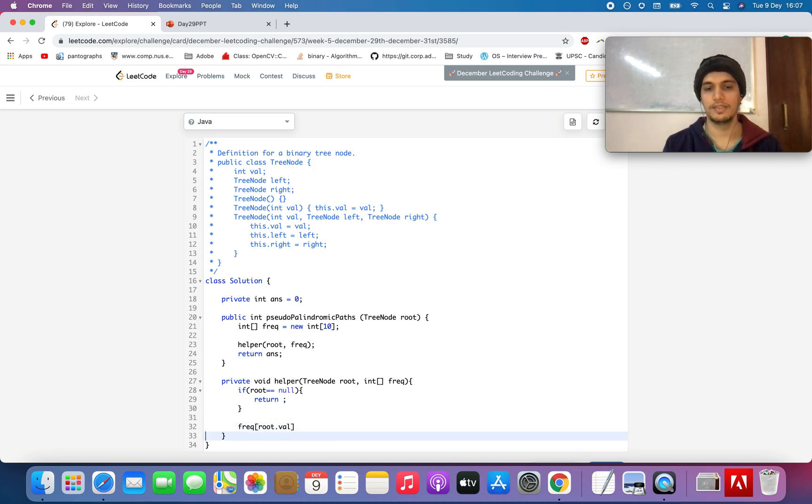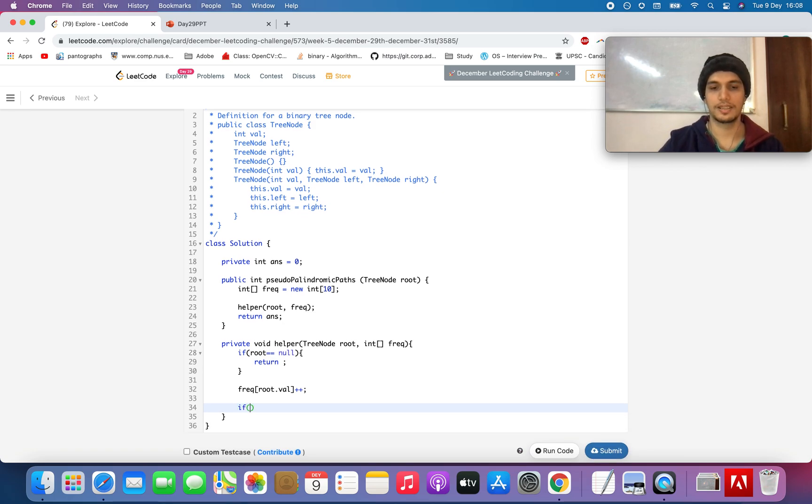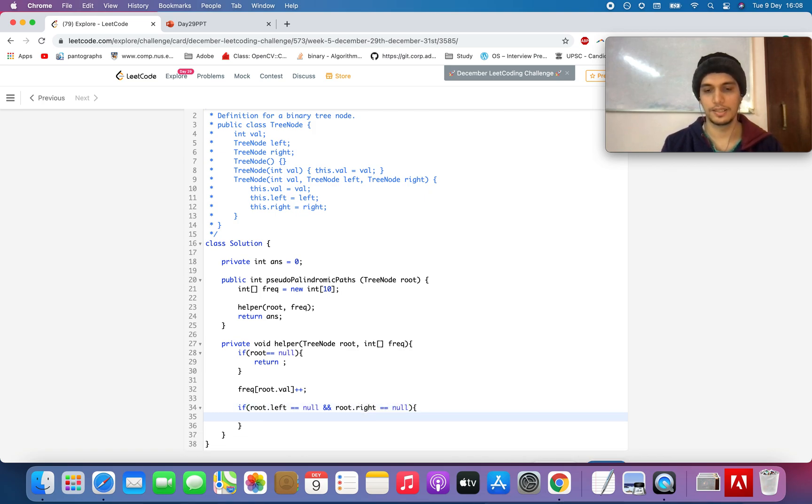And we will check if root.left equals to null, whether it's a leaf node or not, and root.right equals to null again. If it is, now we got a leaf node - we have reached a leaf node, this is a leaf node.